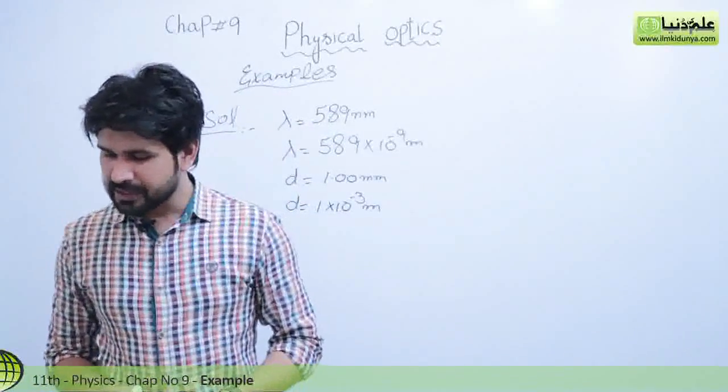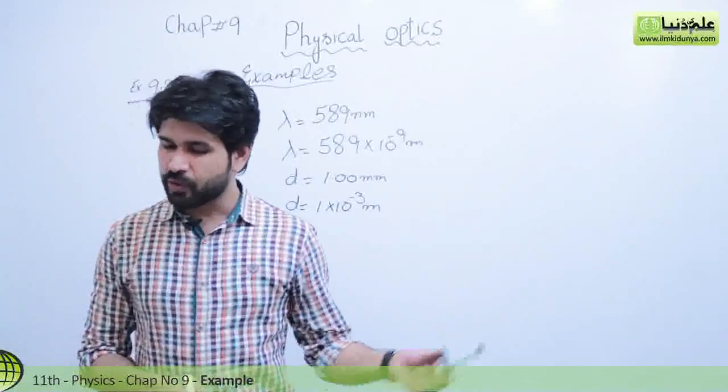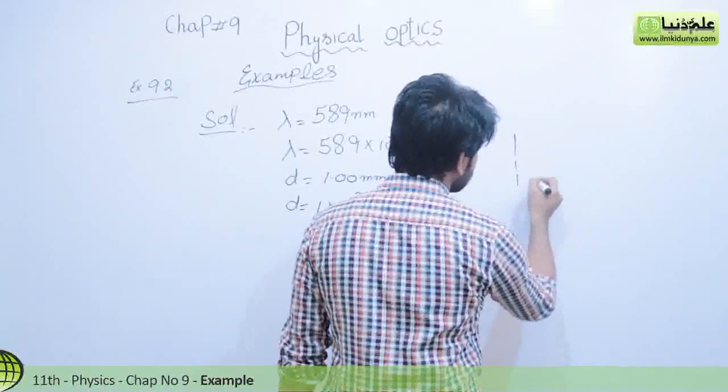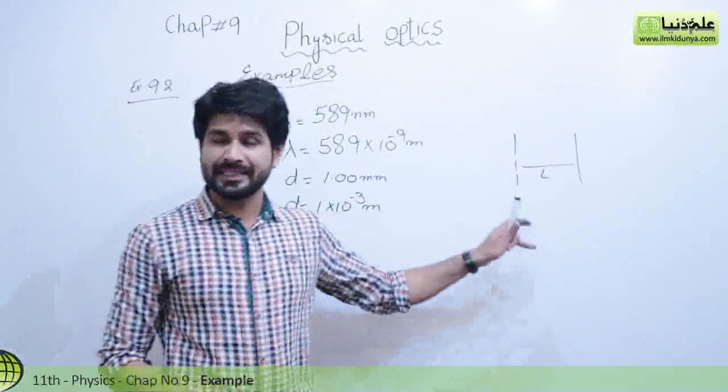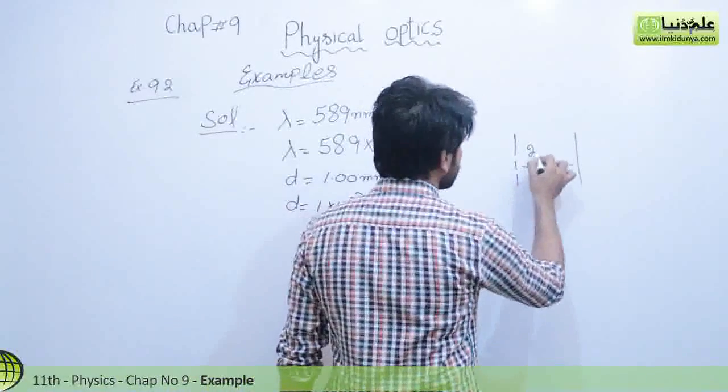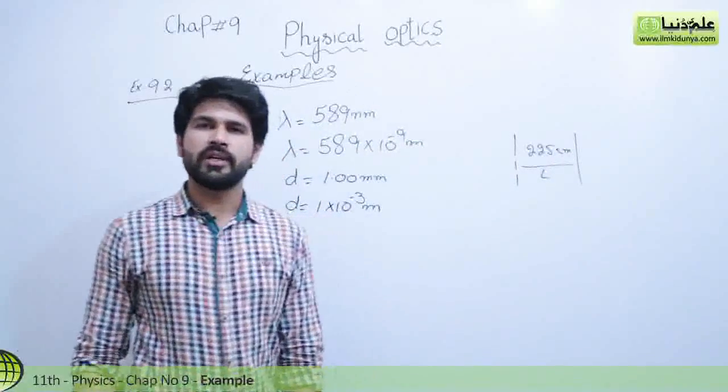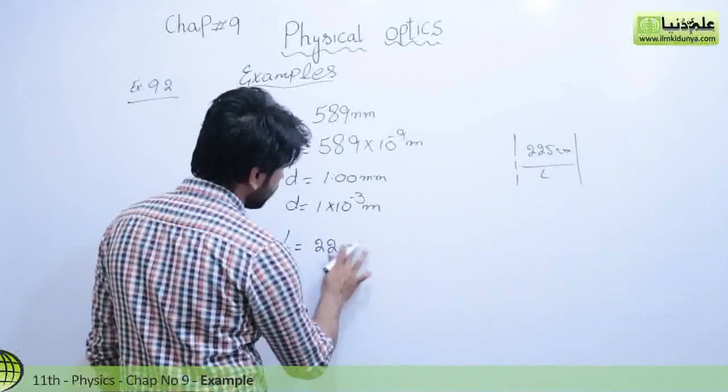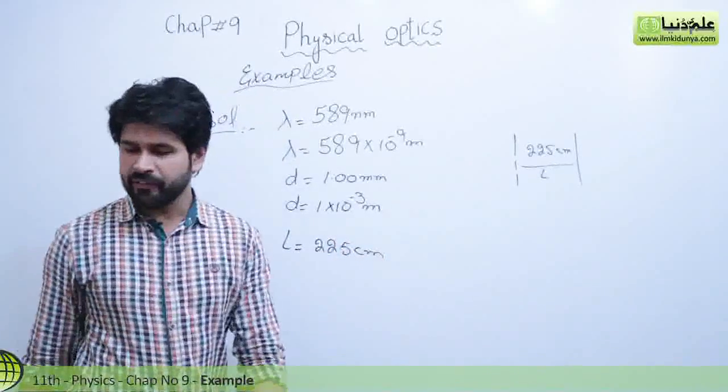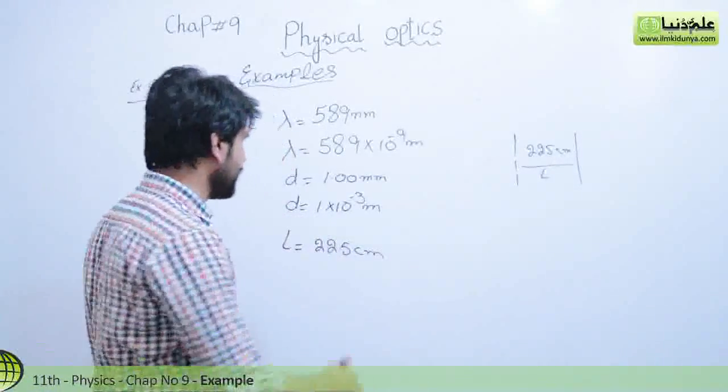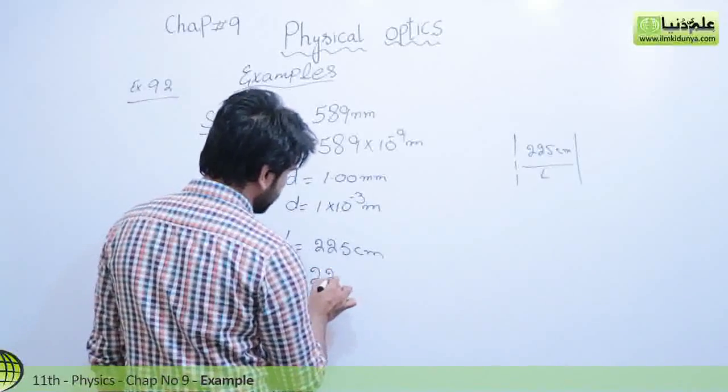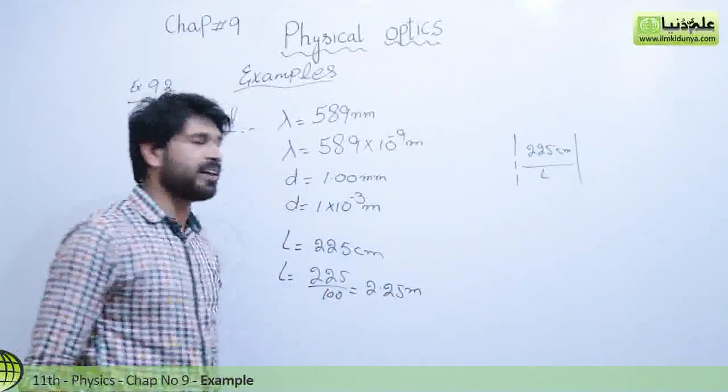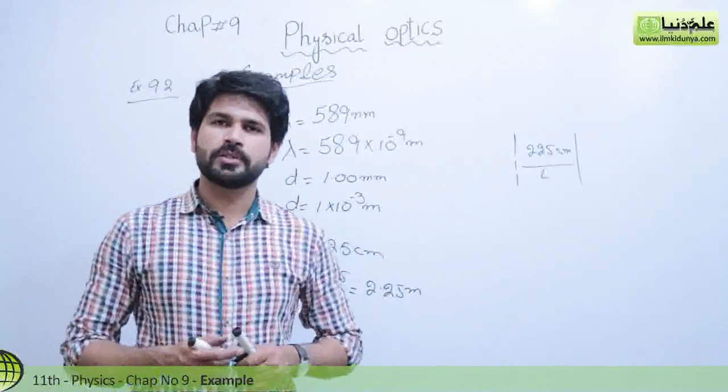The other thing given is the interference pattern is observed on the screen 225 centimeter away. Like this we have the slits here and the screen is here. So the distance between the slits and screen is 225 centimeter. We can write this as L equals 225 centimeter. We will convert this centimeter into meter by dividing by 100. So when we divide 225 by 100 we will have 2.25 meter. You can use a calculator for this.